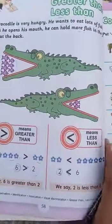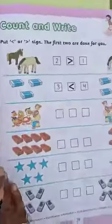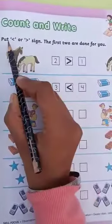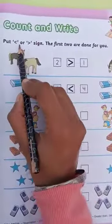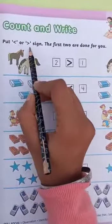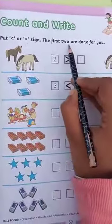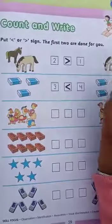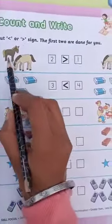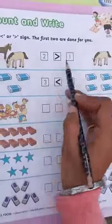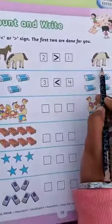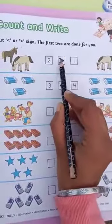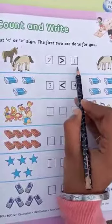Now let's come to the exercise. Count and write, then put less than and greater than signs — the first two are done for you. How many horses are there? 1, 2 — and there is only 1. So 2 is greater than 1.